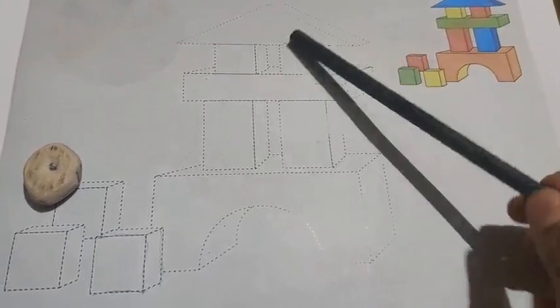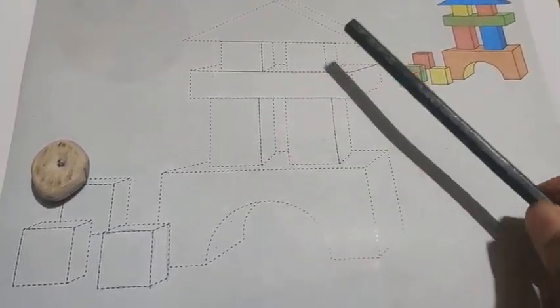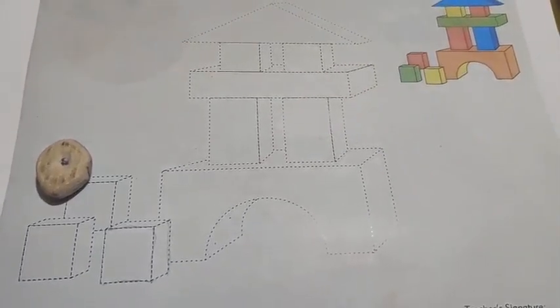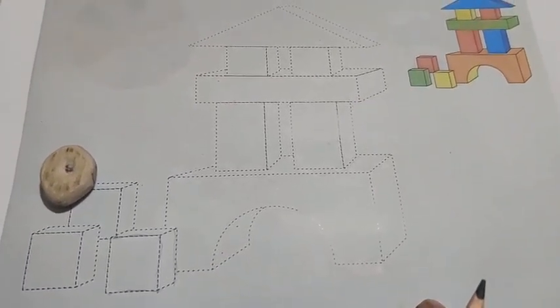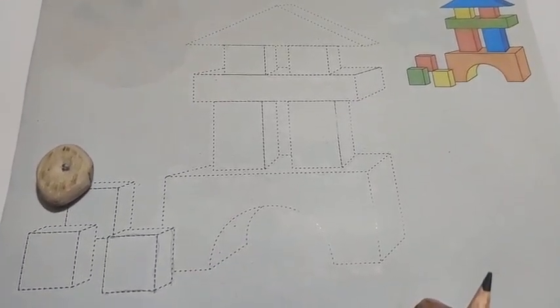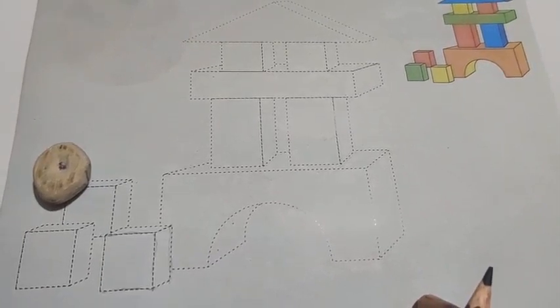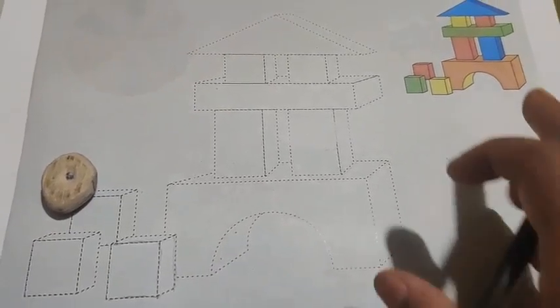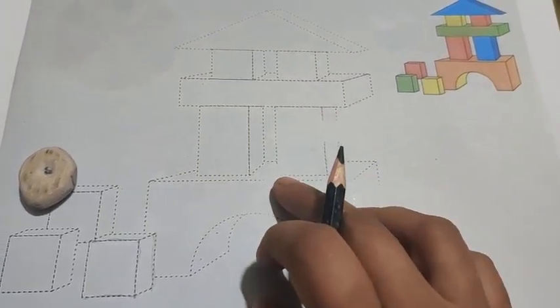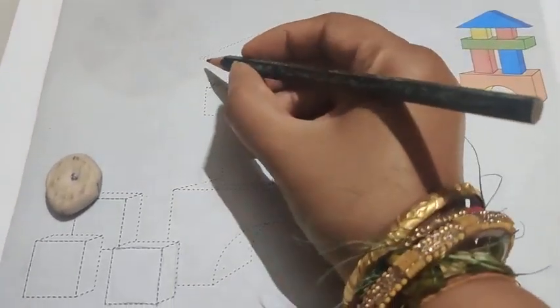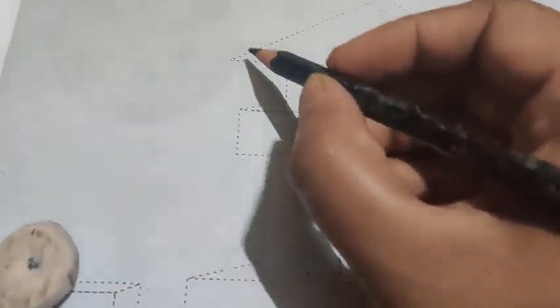You can see already picture has given with the dotted line. Means everything had done, you had only matched this dotted line and make it picture, do the picture. And according to that how the color is given here, according to that you have to fill the color. So first we join the dotted line.